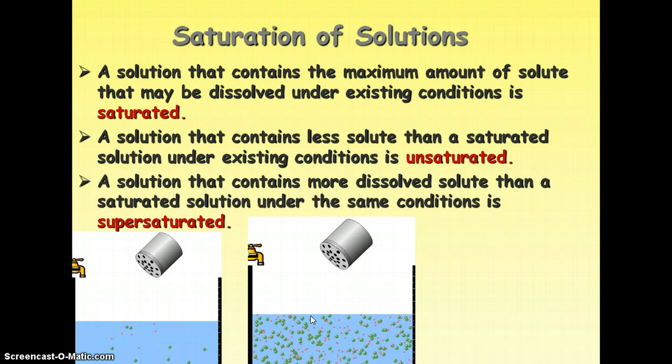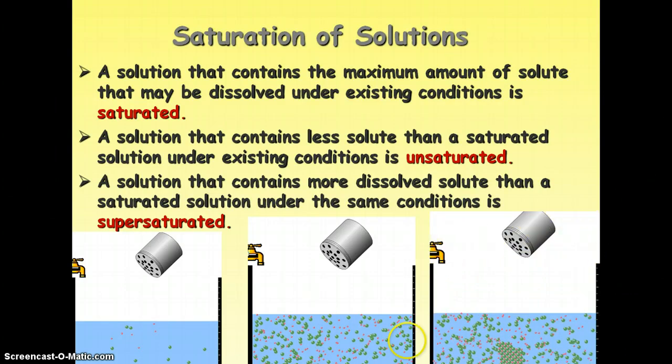And then you have a solution that's going to contain more than what can be dissolved under existing conditions, and that's called supersaturated. So in supersaturated solution, you see you get most of it dissolved, but then you have this clump, this crystal lattice in the middle that does not dissolve. So let's relate this back to our chart.